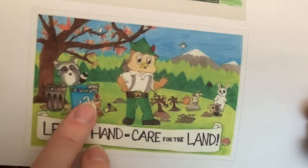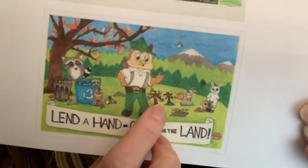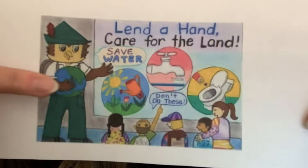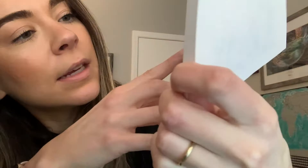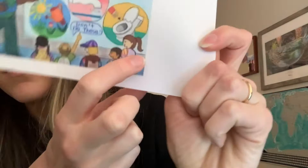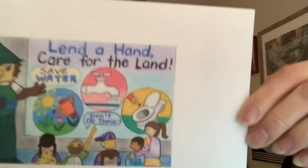Lend a hand, care for the land. We've got a recycling bin here, a garbage bin, they're planting some trees it looks like, the animals are happy. Here's another one as well — save water, planting flowers. And some examples of what not to do: running water when brushing teeth, throwing the wrong things down the toilet like trash. They also have Woodsy the Owl. So here are some examples.